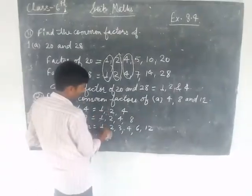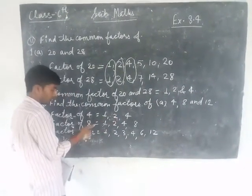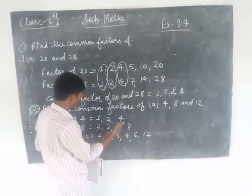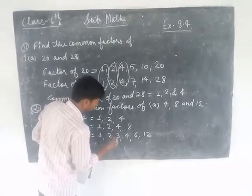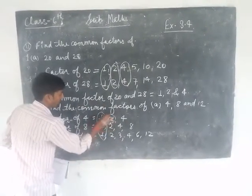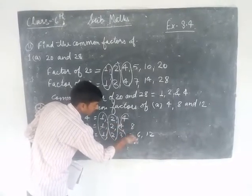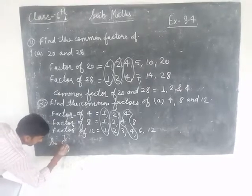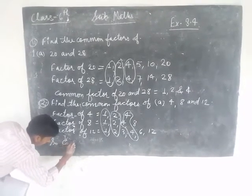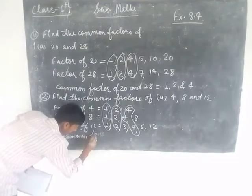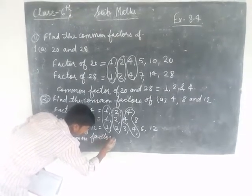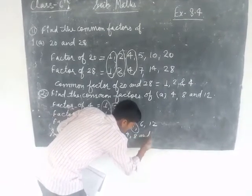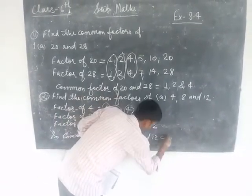Now 1 is a common factor. 2 is a common factor of 4, 8, and 10 — 2 is a factor of all three, so 2 is also common. 4 is a factor of 4, 8, and 10, so 4 is also a common factor of 4, 8, and 10.